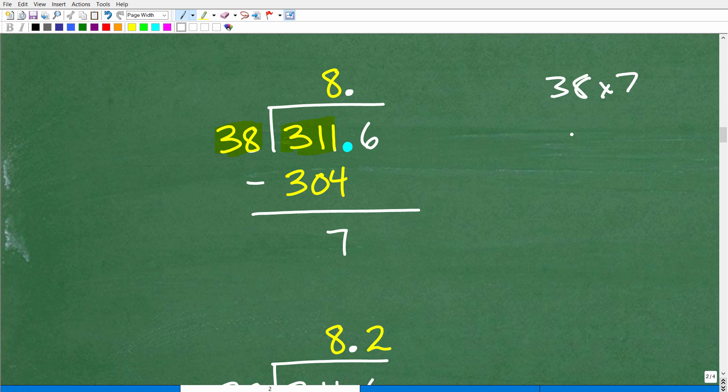38 times 8. So, 38 goes into 311 8 times. So, now we've got to go 8 times 38 is 304. So, now we're going to subtract 304 from 311, and we get 7.